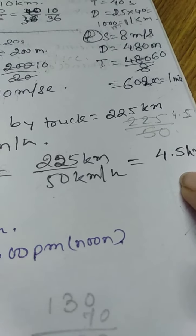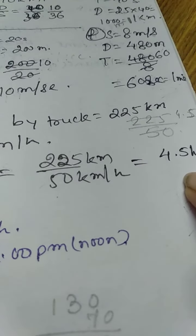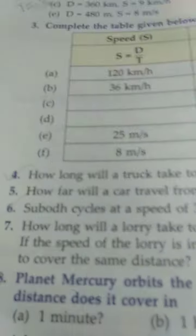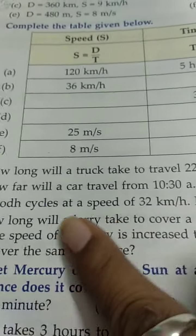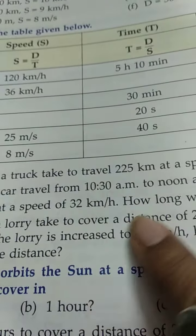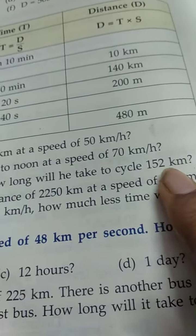Next, question number 6. Someone cycles at a speed of 32 km per hour. How long will he take to cycle 152 km?